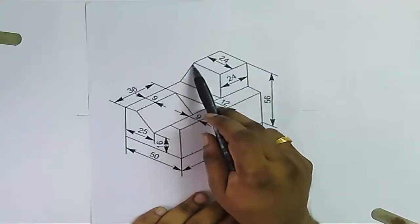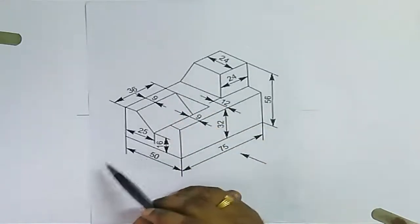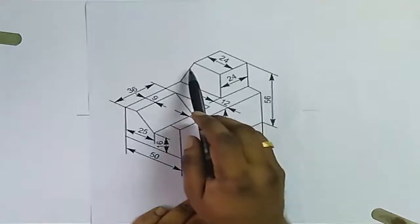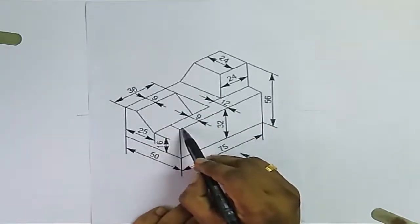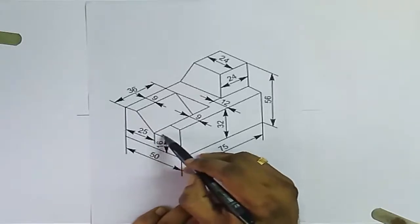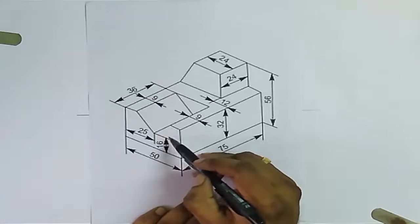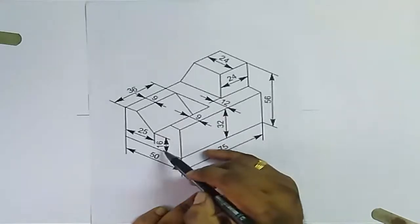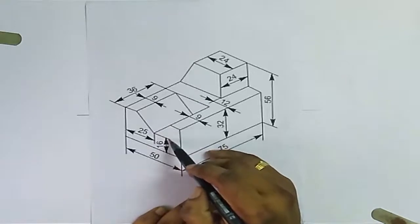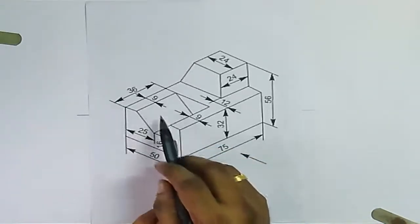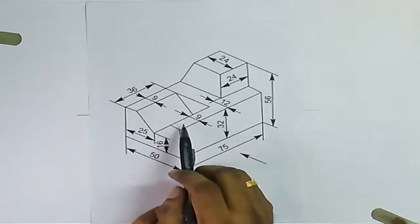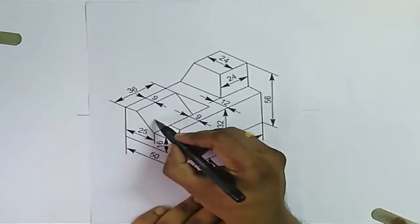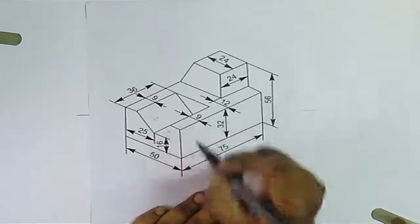There will be a slant edge here. When you view from the left or right side, you can see this slant edge clearly — this is a vertical line, this is a diagonal line, and this is a slant line. The length here is 9 mm. For the V edges: total height is 56, this portion is 24, so this is 32, and 32 minus 16 gives 16, which is the height of this V. The width of this V is: total length 50 minus 9 minus 9 equals 32, so the V width is 32 and the V height is 16.